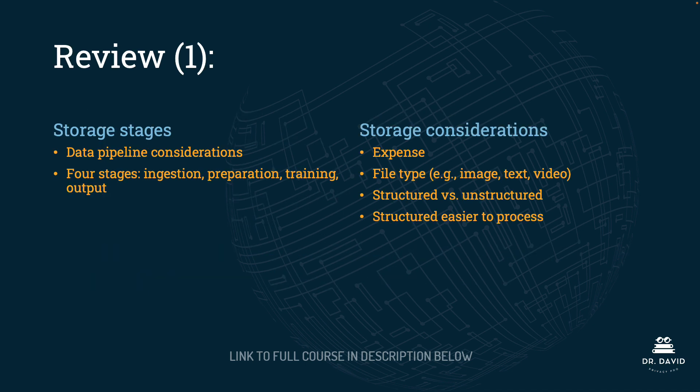In this lecture, we have looked at the storage and network component of the AI tech stack. When it comes to storage stages, remember there are different considerations for each of the four stages in the data pipeline. Those four stages are ingestion, preparation, training, and output. For each stage, you need to consider expense, the file type of the data — image, text, video, audio, etc. — and whether that data is structured or unstructured. Remember that structured data is the easiest to process.